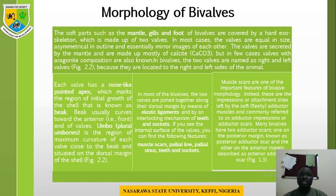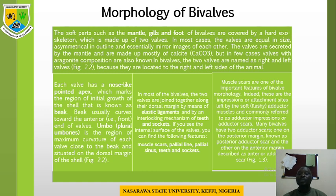In most bivalves, the two valves are joined together along their dorsal margin by means of elastic ligaments and by an interlocking mechanism of teeth and sockets. If you examine the internal surface of the bivalves, you can find further features such as the muscle scars, the pallial line, the pallial sinus, and the teeth and sockets. Muscle scars are one of the important features of bivalve morphology; these are the impressions or attachment sites left by the soft adductor muscles, commonly referred to as adductor impressions or adductor scars.